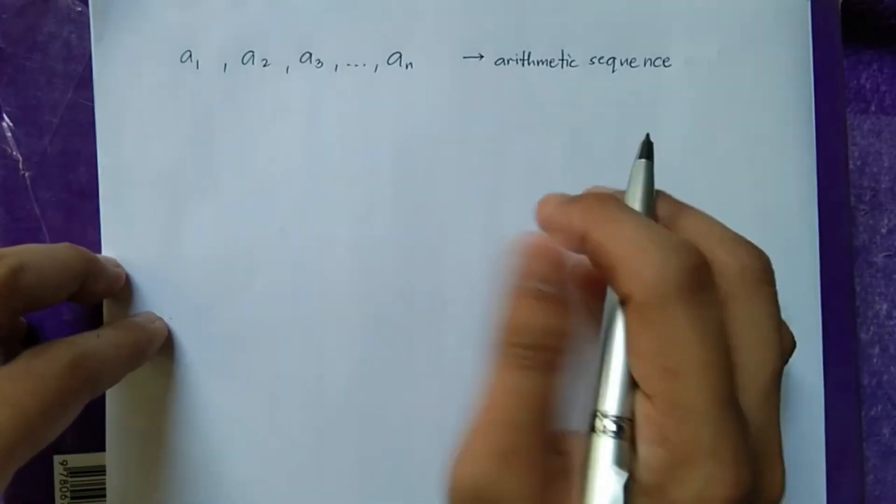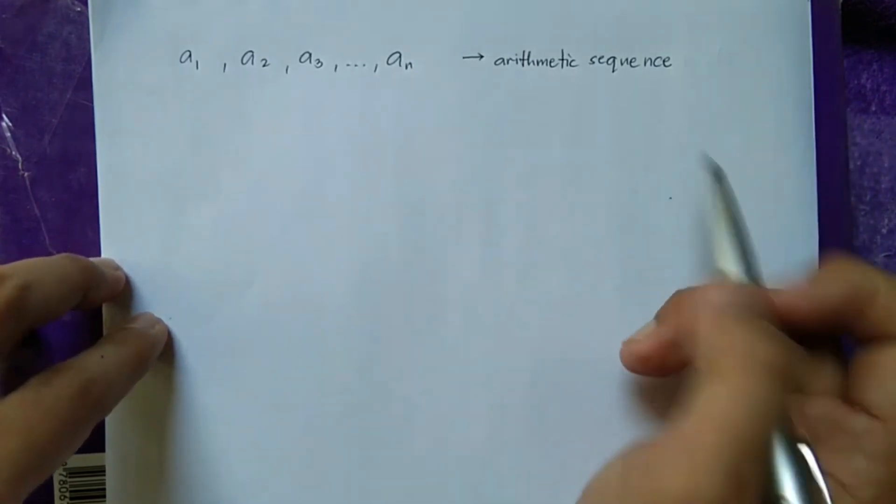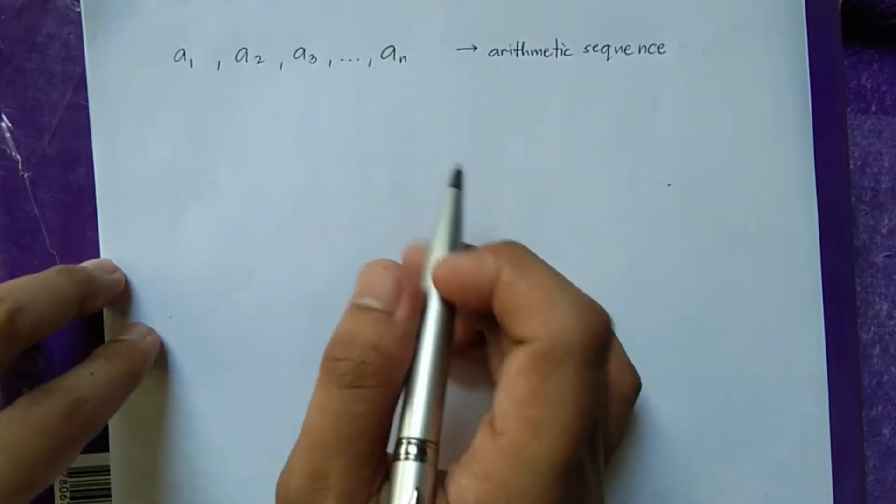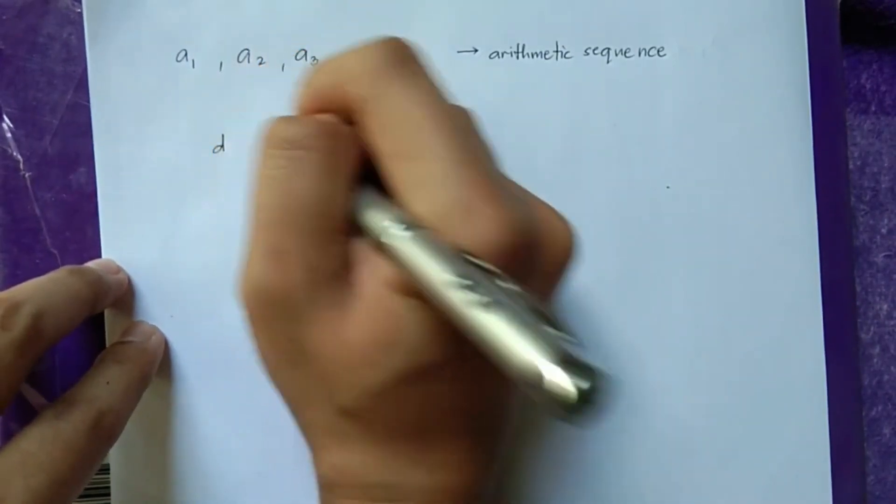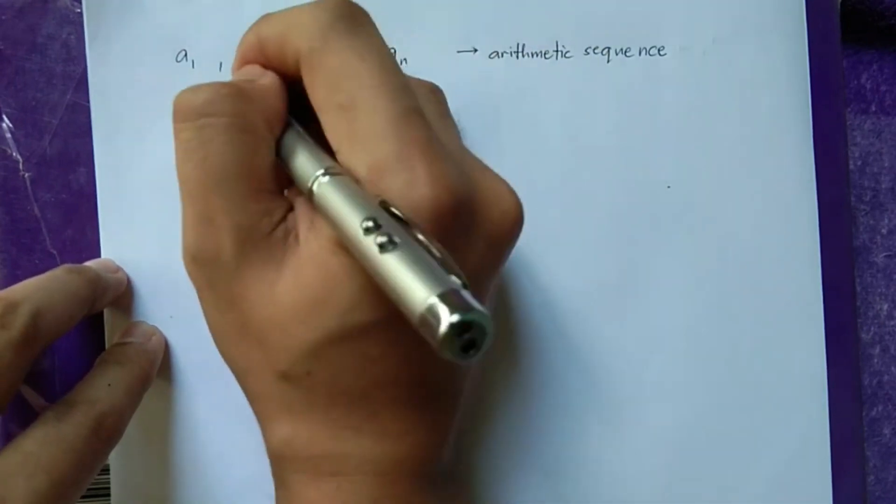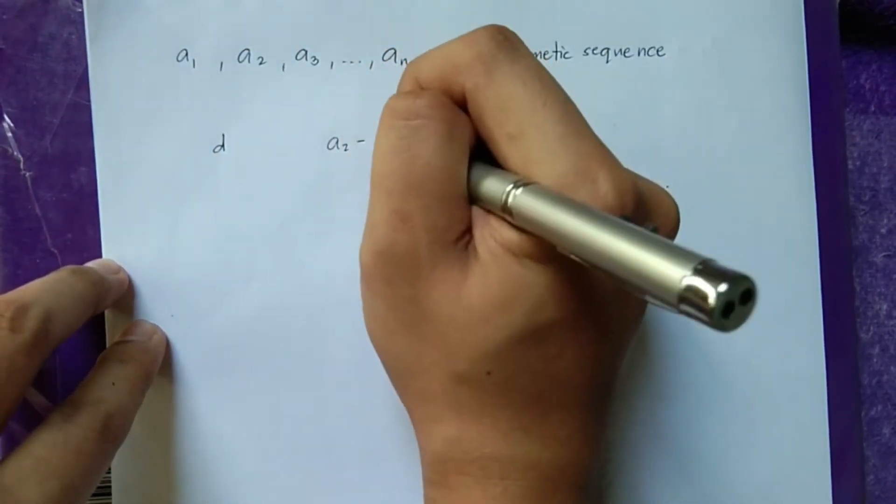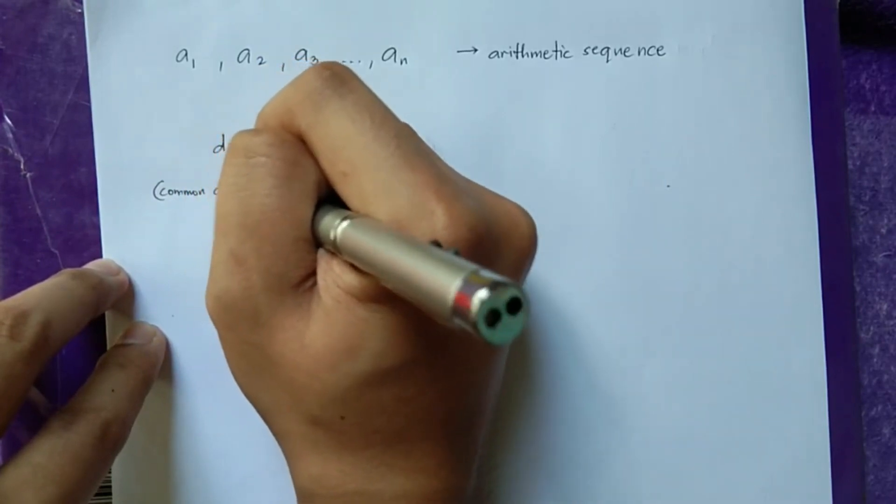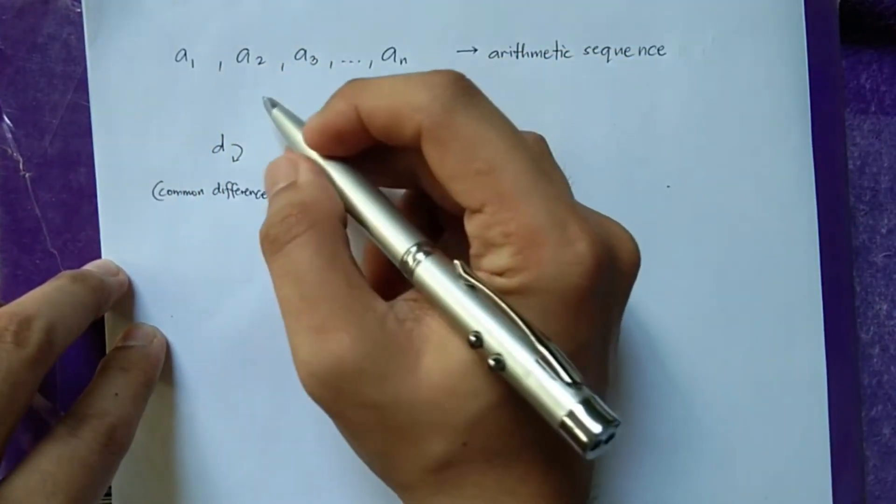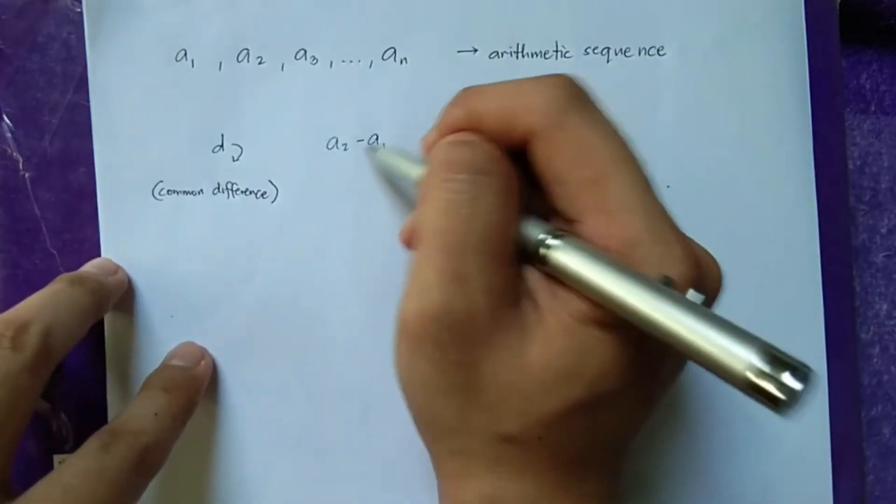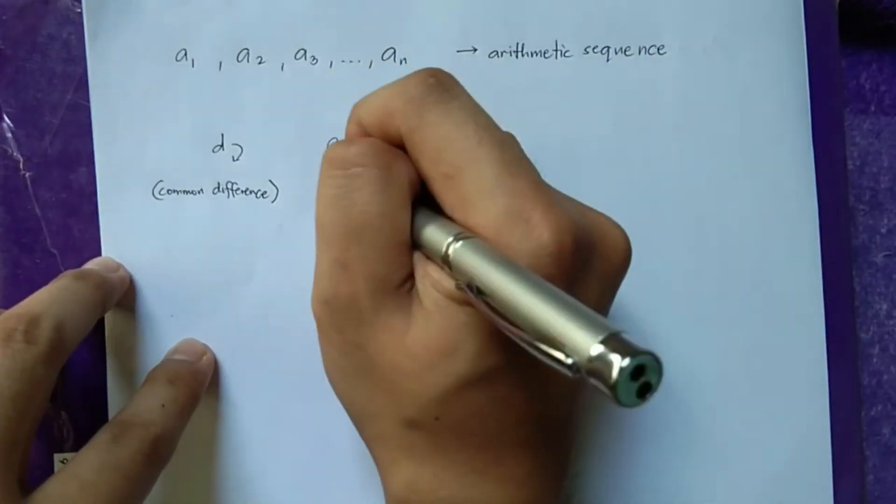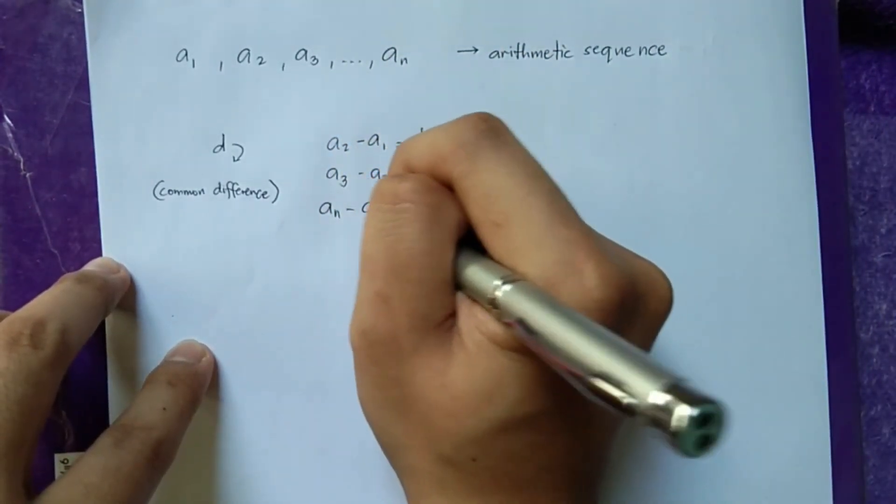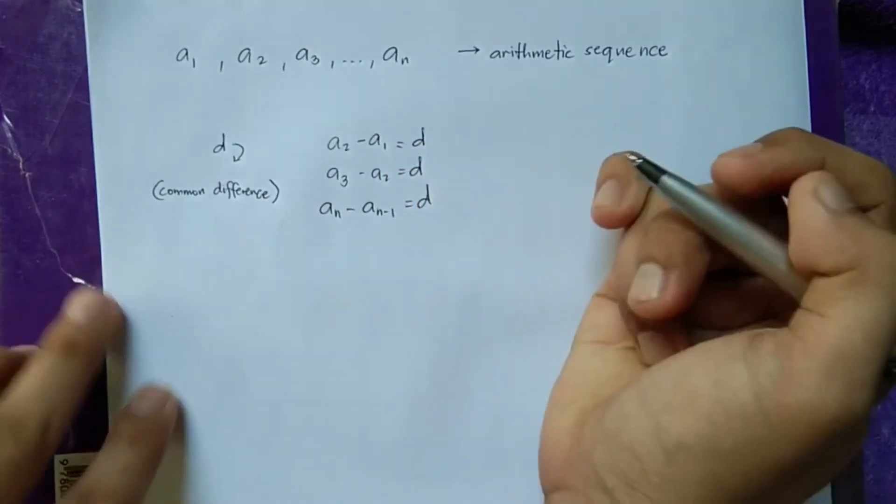To begin with, let us find a formula for the nth term of any arithmetic sequence. So consider a₁, a₂, a₃, and so on and so forth up to aₙ be an arithmetic sequence. Also, let d be the common difference between each term such that succeeding terms, let's say a₂ minus a₁, d here is the common difference. Such that succeeding terms minus the preceding term is equal to d. So a₂ minus a₁, that should be equal to d. a₃ minus a₂, that should also be equal to d.